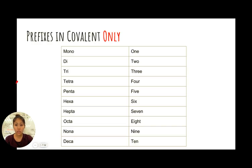These prefixes are only used in covalent. So when you see a chemical name that uses any prefix, you know immediately that this is a covalently bonded compound.